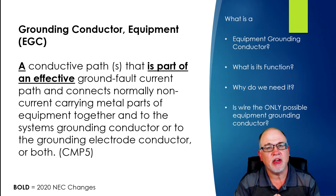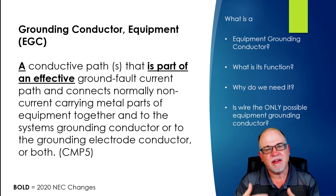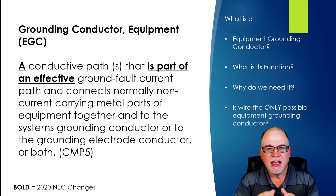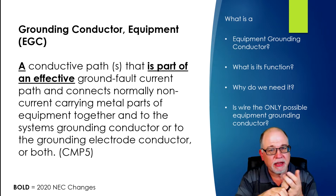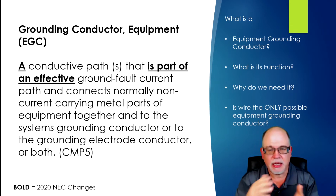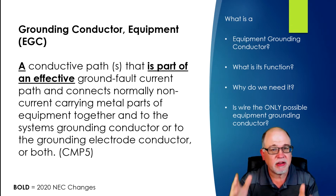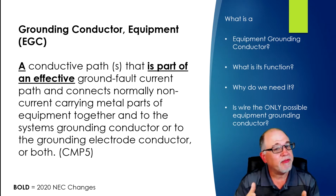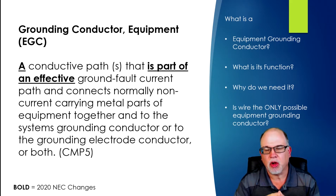Most engineers will probably specify the wire type because they feel it's more reliable. But at the end of the day, if you make up all those fittings — those couplings and everything right — EMT, rigid metal conduit, intermediate metal conduit, and a couple others in that list would all qualify as an equipment grounded conductor. But again, we're going to talk about the wire type in this episode.